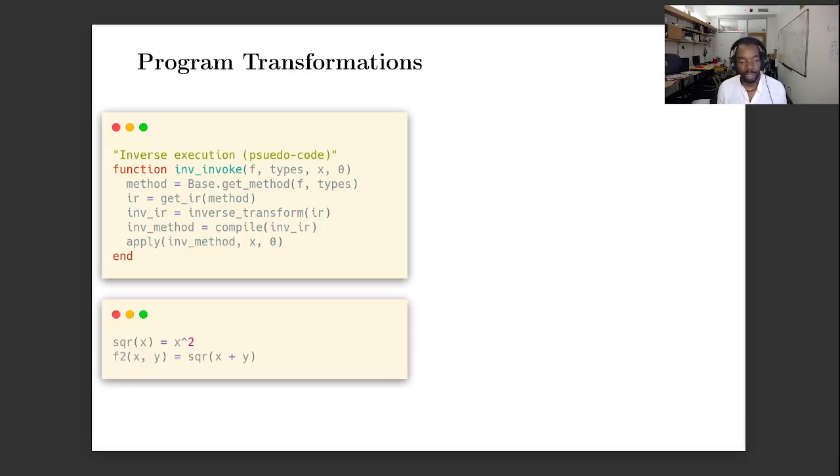So let's look at this example that we've been following so far. We have f2 of x and y equals the square of x plus y. And then in IR form it's very much the same, except that we're in SSA form so every variable is only defined once.